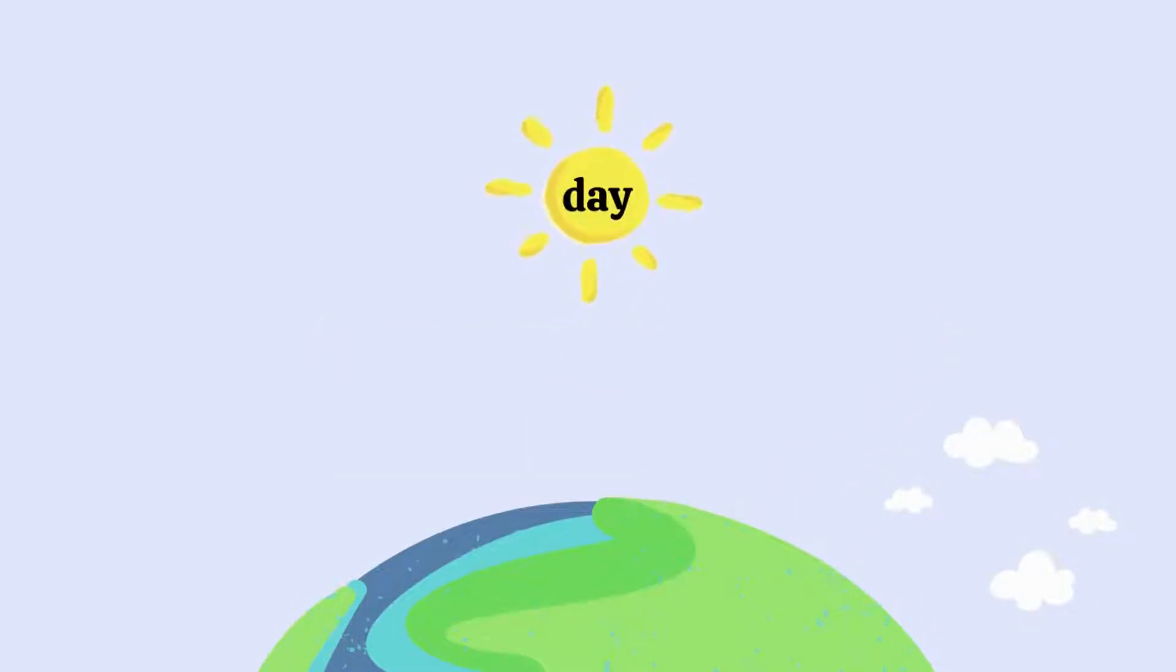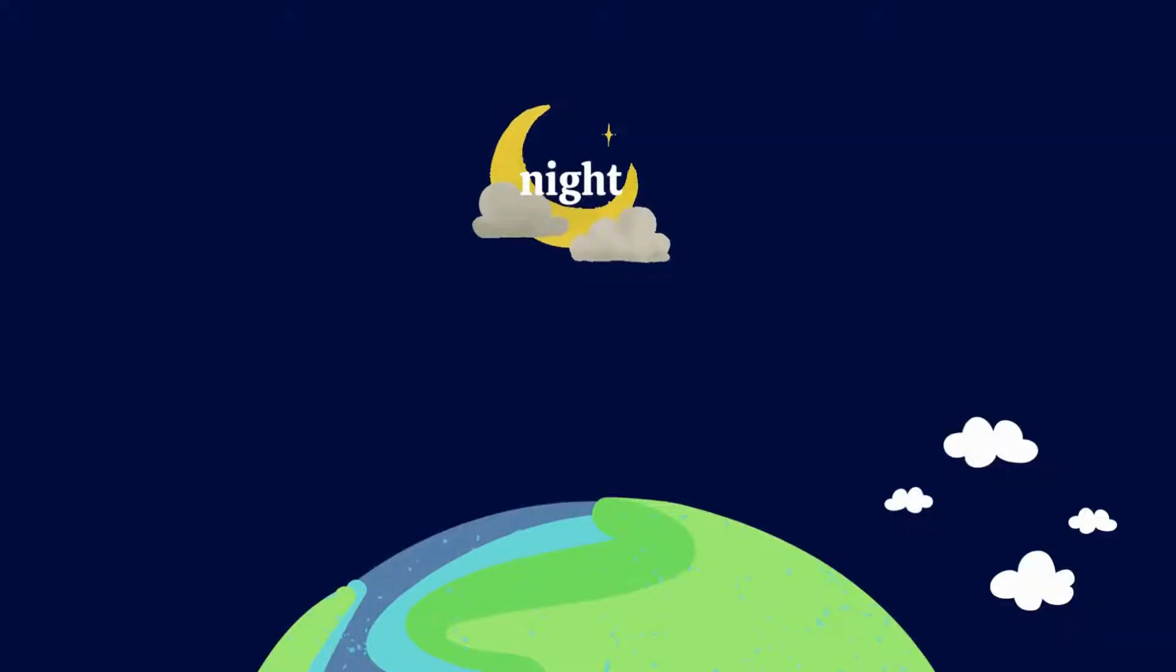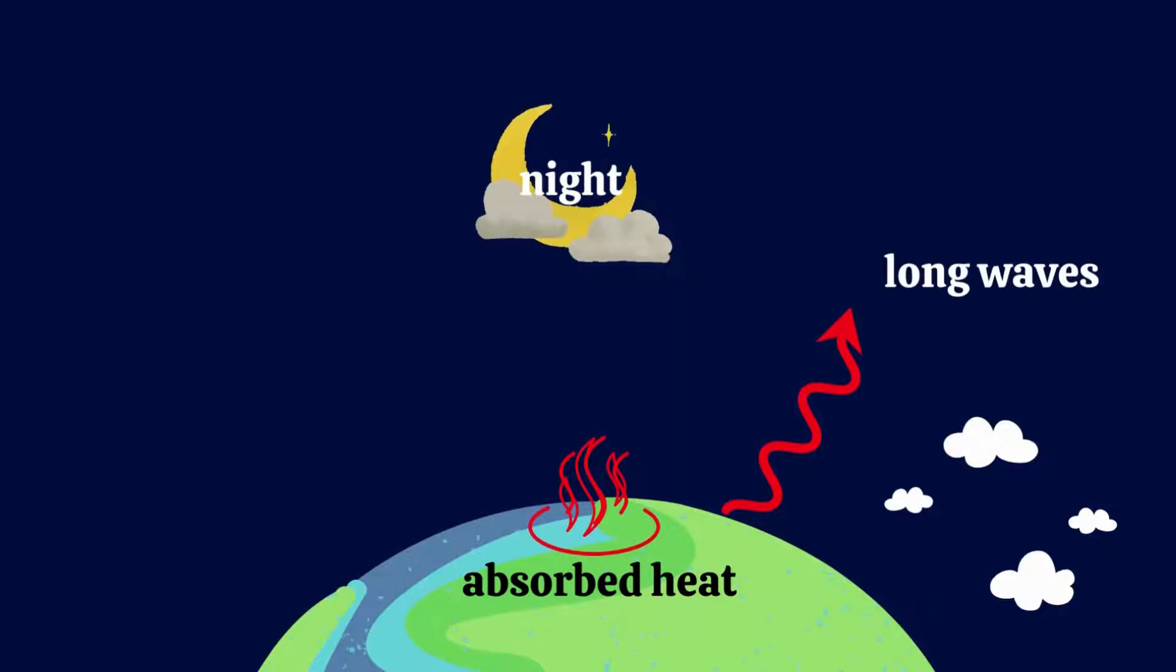So, during the day, we have incoming solar radiation in the form of short waves called insolation. Then, at night, the heat absorbed by the land and oceans gets emitted as outgoing solar radiation in the form of long waves called terrestrial radiation.